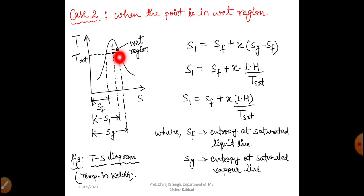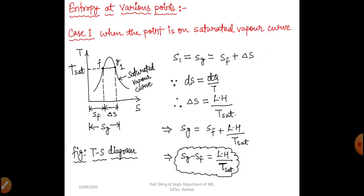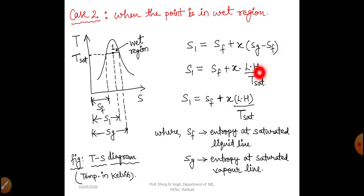Case 2: When the point is in the wet region. S1 = SF + x·(SG − SF). Since SG − SF = LH / T_sat, we can write: S1 = SF + x·(LH / T_sat), where x is the dryness fraction, SF is entropy at the saturated liquid line, and SG is entropy at the saturated vapor line.